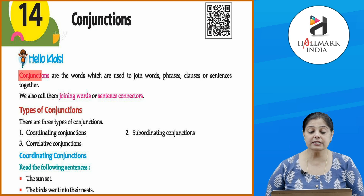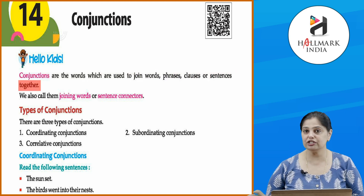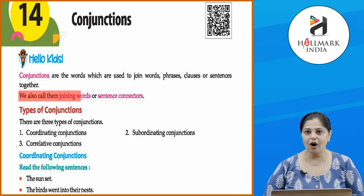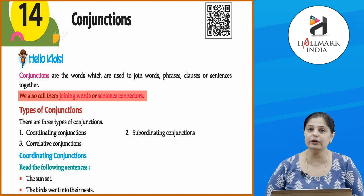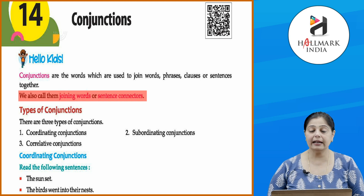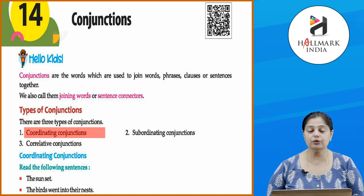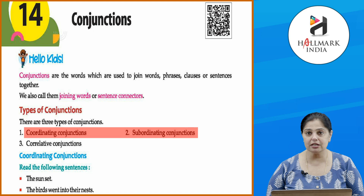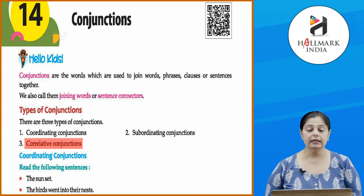Conjunctions are words which are used to join words, phrases, clauses, or sentences together. In simple words, they are joining words or sentence connectors. There are three types of conjunctions: coordinating conjunctions, subordinating conjunctions, and co-relative conjunctions.